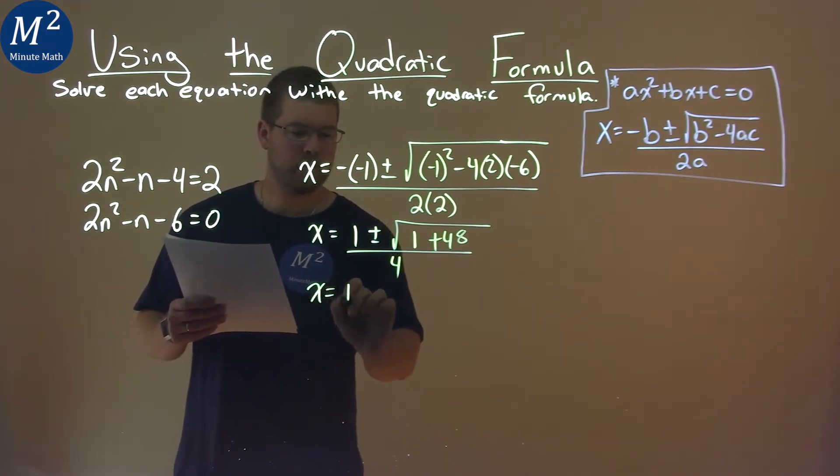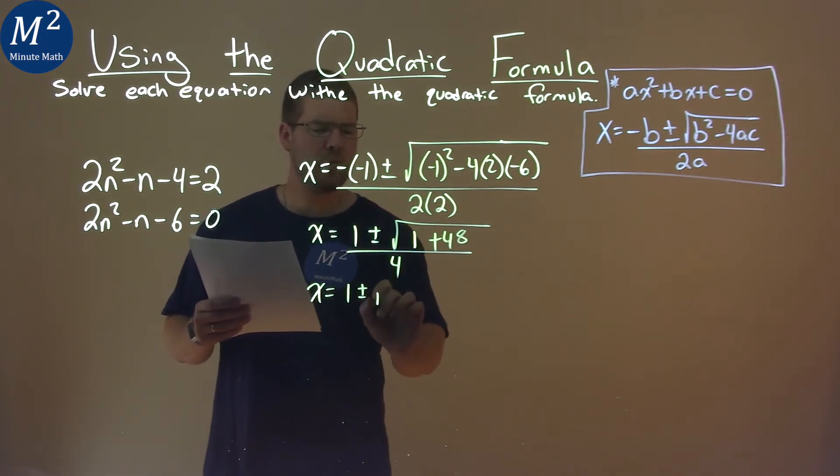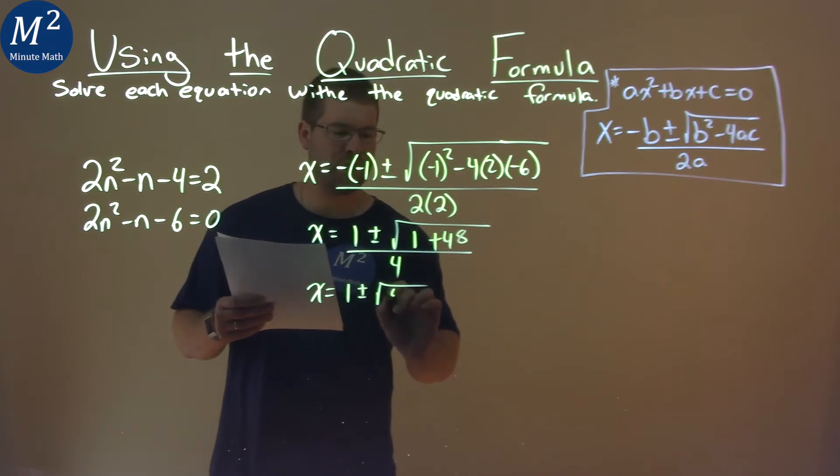Keep going. x equals 1 plus or minus the square root of 1 + 48, which is the square root of 49, all over 4.